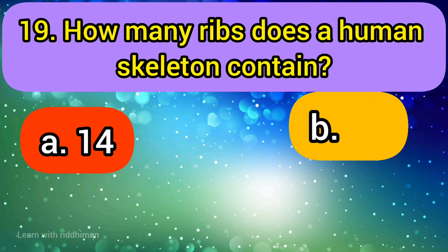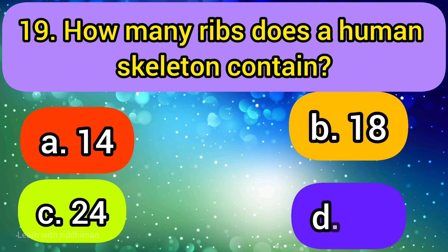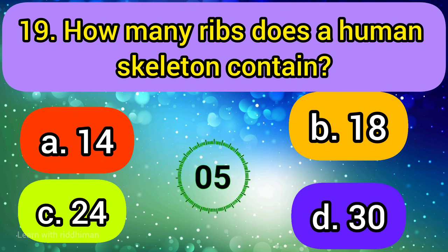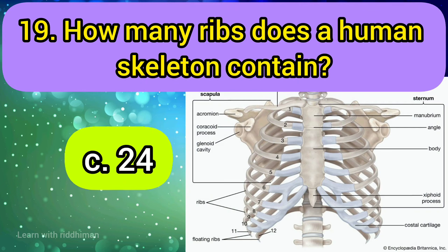How many ribs does a human skeleton contain? 14, 18, 24, 30. Answer is 24.